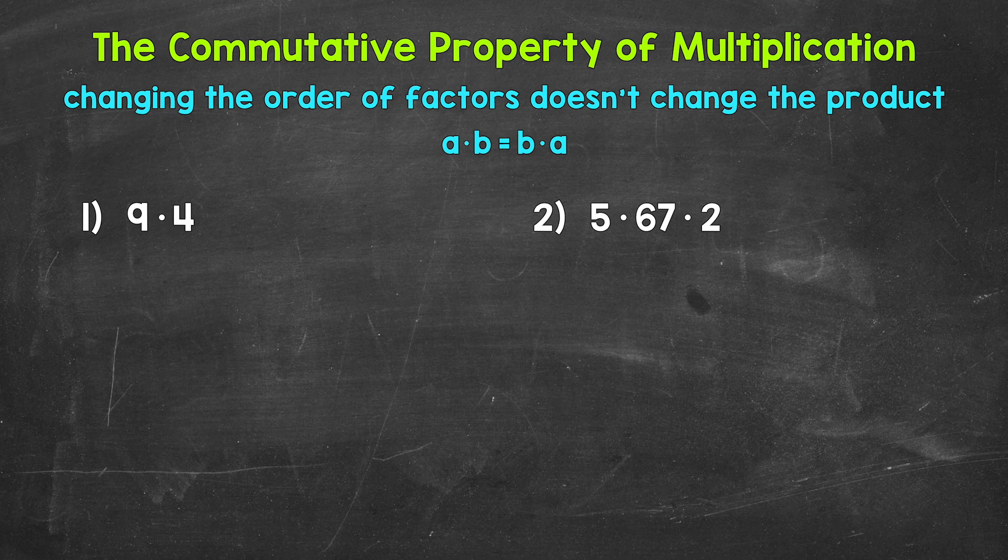So A times B equals the exact same thing as B times A. When we think of the commutative property, think commute or move. We can move those factors around and still get the same answer. Now don't let those letters confuse you. They are there to represent numbers and show that this will work for any numbers.